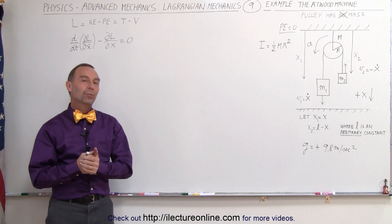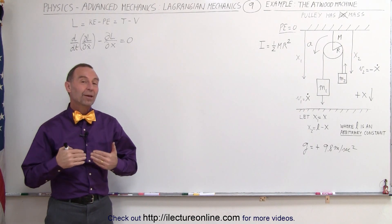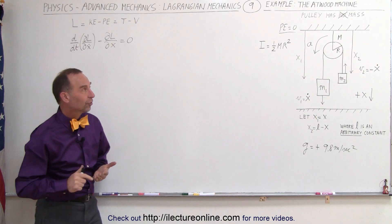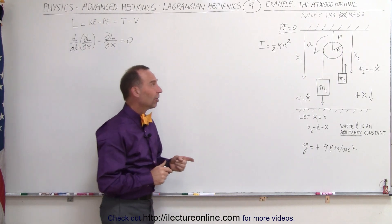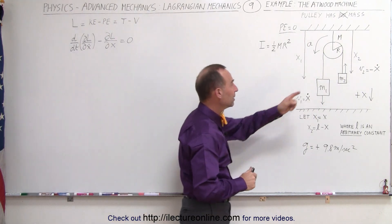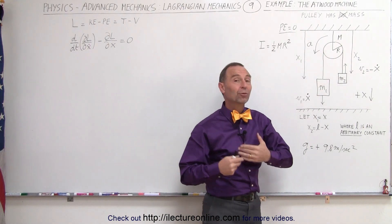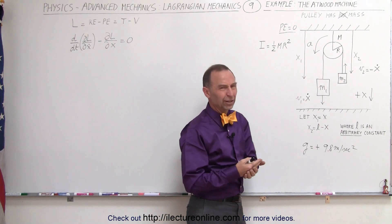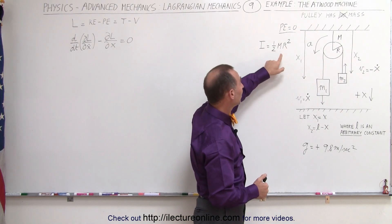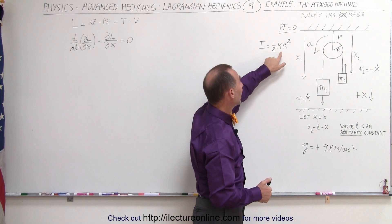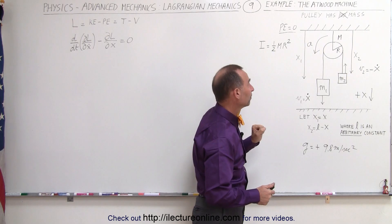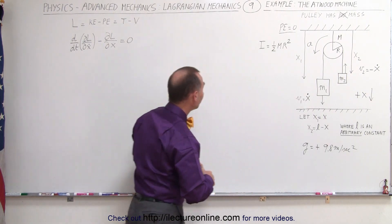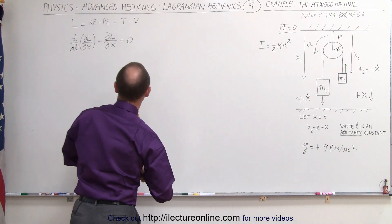Welcome to ElectronLine. We're going to do the same problem we did in the last video with one difference. In this case, our pulley now does have mass, which means it has a moment of inertia. Considering it to be a solid disk, it is equal to one-half mR squared. So let's go ahead and work out the same problem we did before with that slight change.